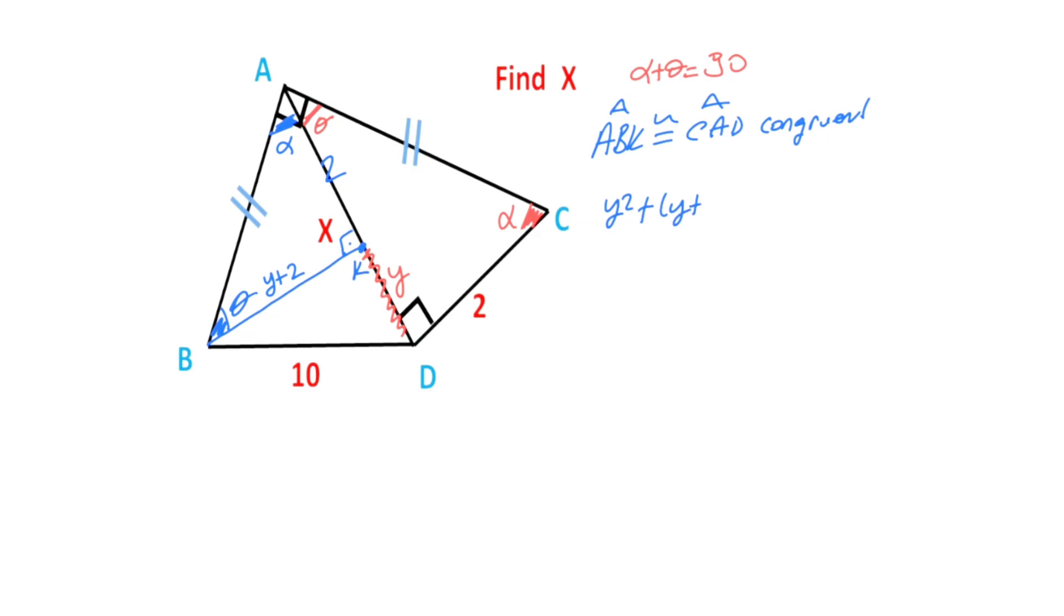Okay. y squared plus (y plus 2) whole squared equals 10 squared. Therefore, y squared plus y squared plus 4y plus 4 equals 100. So, 2y squared plus 4y minus 96 equals 0. Therefore, if we divide by 2 both of the equations,